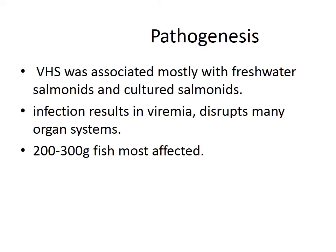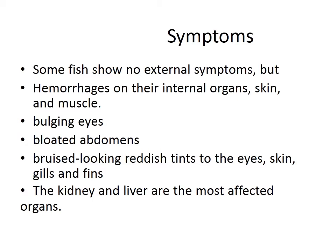Infection results in viremia and disrupts many organ systems. Fish become dark in color, lethargic, and exhibit hemorrhages in eye sockets, ultimately dying. In fish of 200 to 300 grams, no external symptoms may be shown, but hemorrhages on internal organs, skin, and muscles develop. The eyes become bulgy and the abdomen becomes bloated.